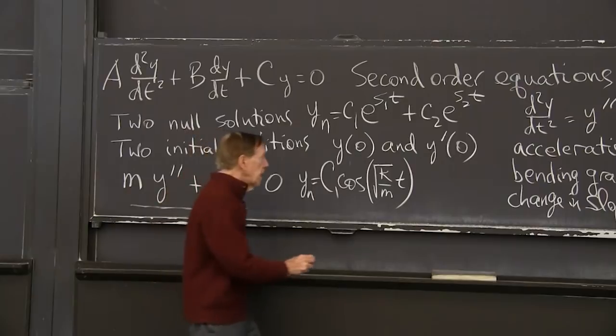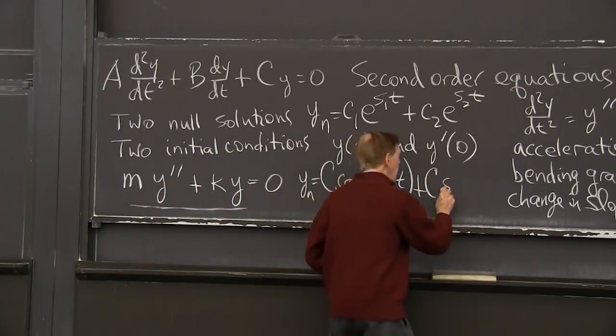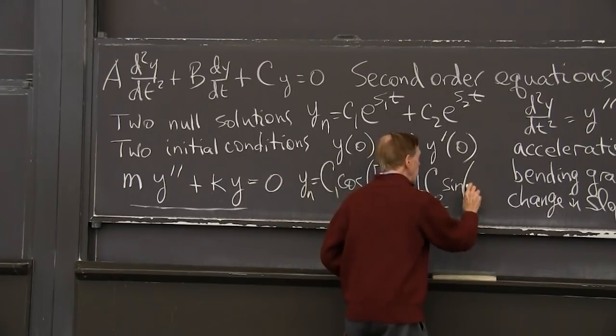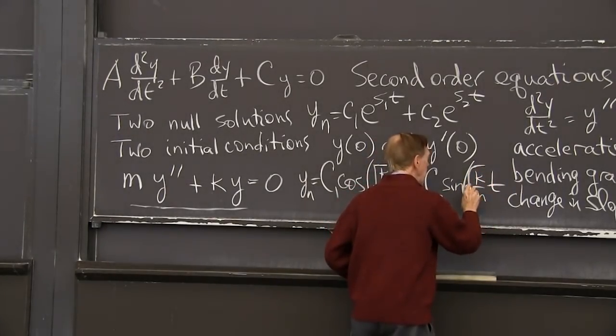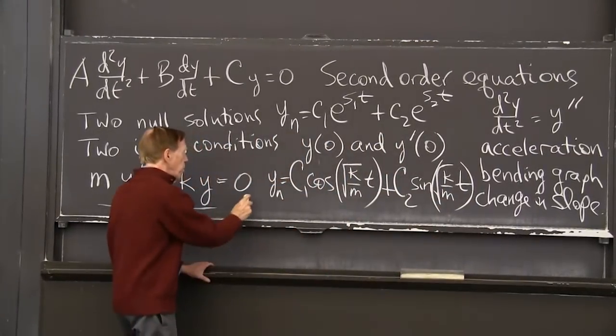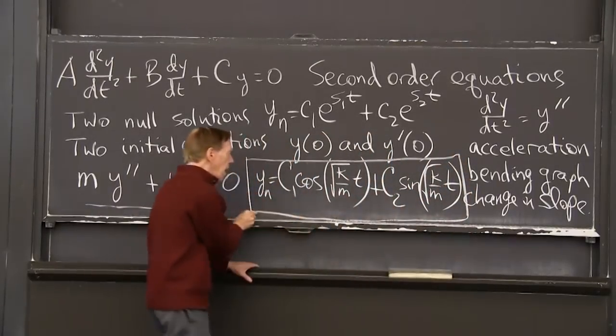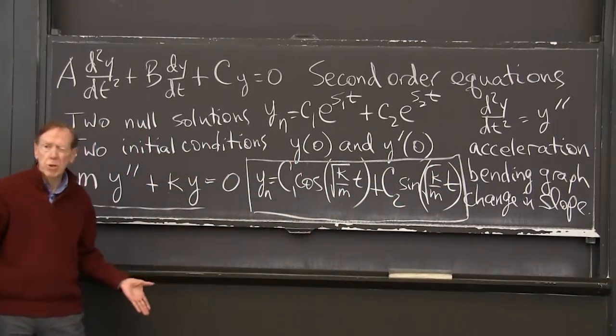And the other solution is just like it. It's the sine of this square root of k over m times t. That's worth putting a box around.